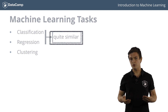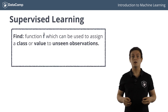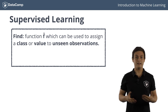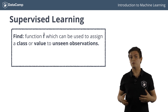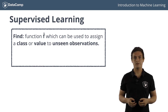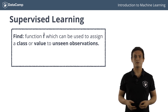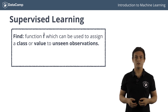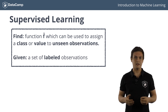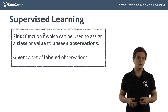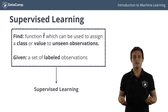For both, you try to find a function or a model which can later be used to predict labels or values for unseen observations. It is important that during the training of the function, labeled observations are available to the algorithm. We call these techniques supervised learning.